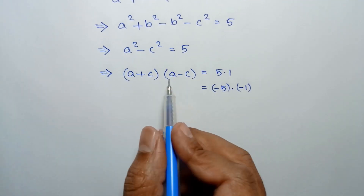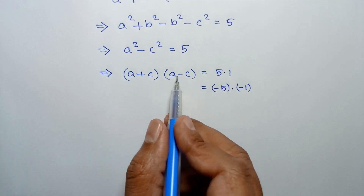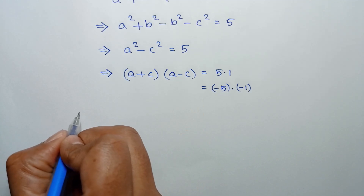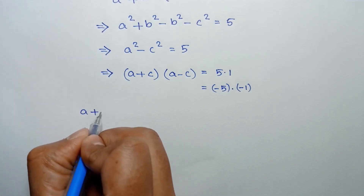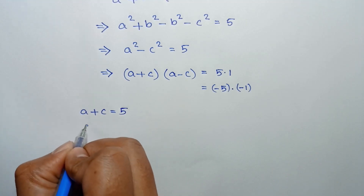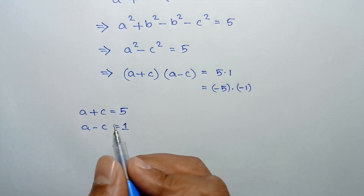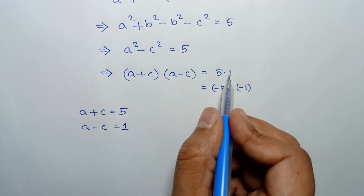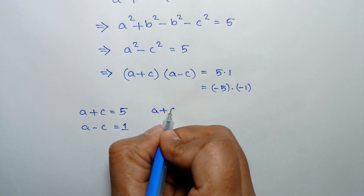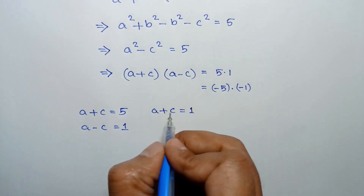Comparing both sides, we get two cases: Case 1 — a plus c equals 5 and a minus c equals 1; Case 2 — a plus c equals 1 and a minus c equals 5. We also consider: Case 3 — a plus c equals negative 1 and a minus c equals negative 5; Case 4 — a plus c equals negative 5 and a minus c equals negative 1.